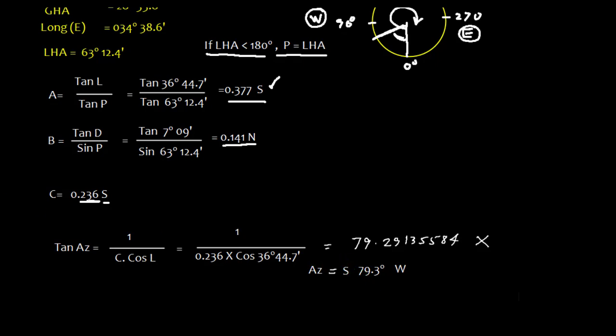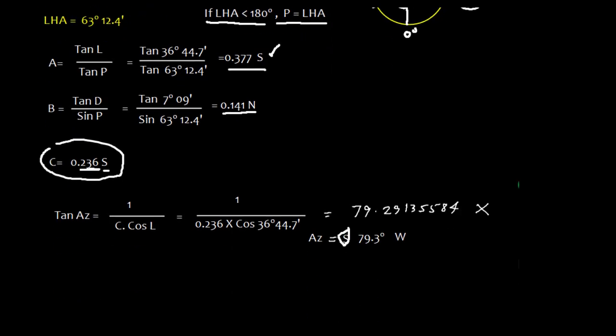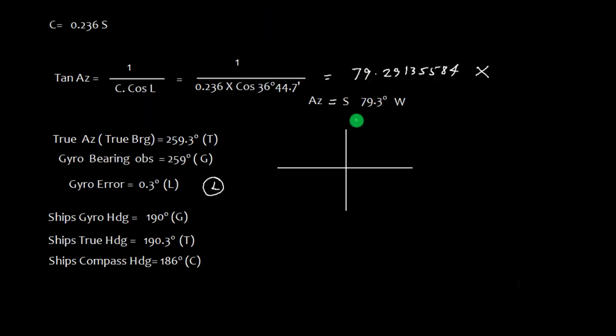Now this azimuth has to be named. The first part is as per C. The second part, we need to go here. The LHA is less than 180 degree, so body is in the westerly direction, so we need to write west. Now let's work out: this is north, south, east, and west. The azimuth is south 79.3 west, so this is the angle we have obtained.